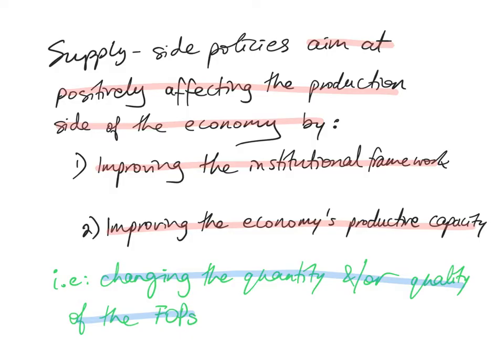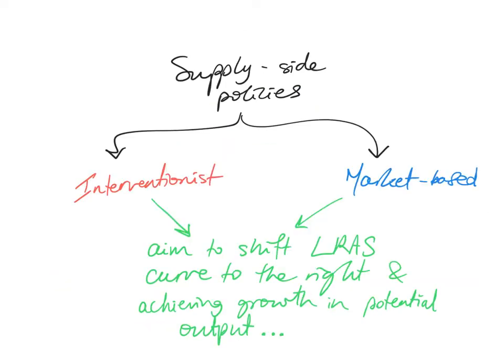So any change that is aimed at changing the quantity or quality of the factors of production falls under supply-side policies. Supply-side policies can be either interventionist or market-based. Whether they are interventionist or market-based, the aim is to shift the long-run aggregate supply curve to the right and achieve growth in the potential output of the economy.